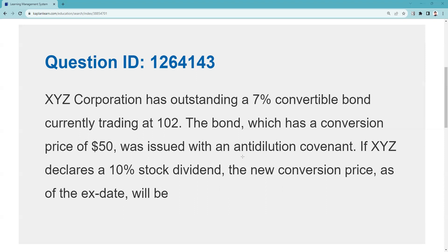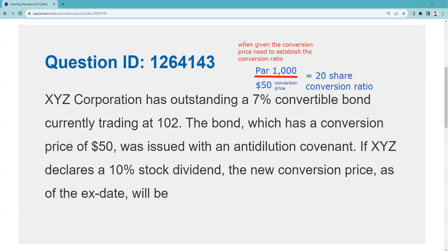QID 1264143: XYZ Corporation has an outstanding 7% convertible bond currently trading at 102. The bond has a conversion price of 50. As I always say, the minute you get the conversion price, you need to convert it to the conversion ratio. Par divided by 50 gives me a conversion ratio of 20 shares.